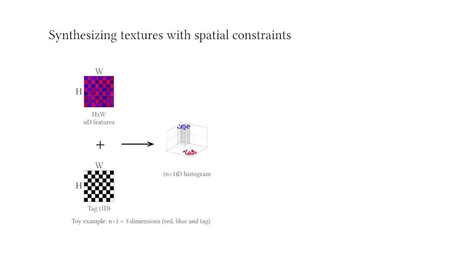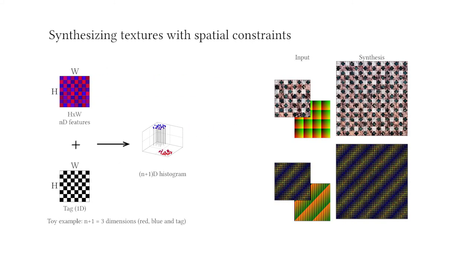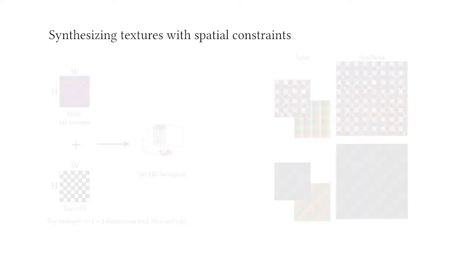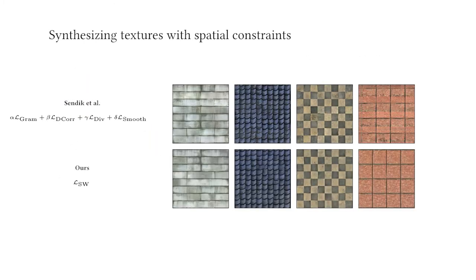If we proceed through slicing as before, this has the beneficial effect of preserving periodicity at synthesis time. As a result, we can synthesize periodic textures using a single loss, and obtain a quality comparable to related work that requires a combination of four hard-to-tune loss terms.